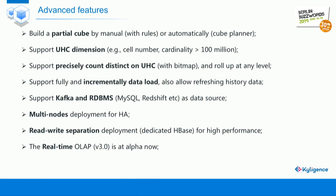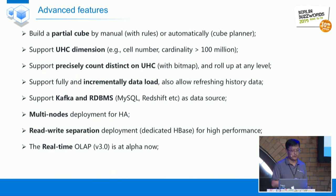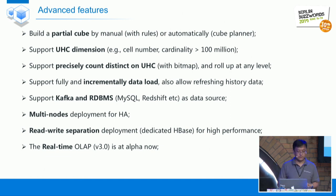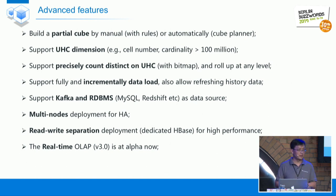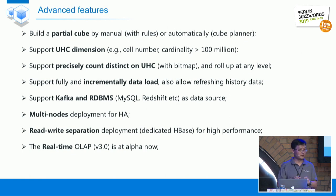Kylin also has many advanced features. When you have many dimensions, you can define a partial cube with some rules, or use an algorithm we call the Cube Planner. It also supports very high cardinality dimensions such as user ID, cell phone number, etc., and supports precisely count-distinct measures on high-cardinality columns. It supports incremental data load, so you don't need to refresh history data when loading new data. It also supports Kafka and RDBMS as data sources. In production, you can scale to a multi-node cluster and even separate cube building and cube querying into different Hadoop clusters — what we call read-write separation deployment.